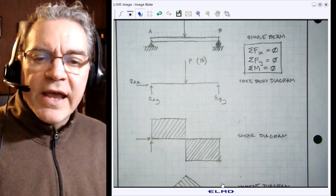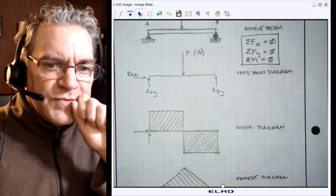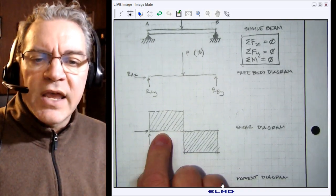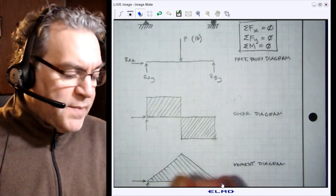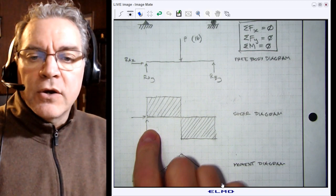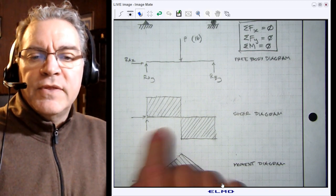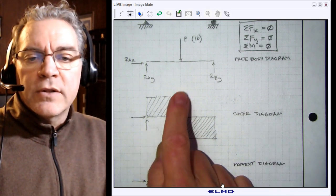The shear diagram is essentially just a diagram representing the shear force within the beam. With a point load this is what it looks like. We have a single point load in the middle.